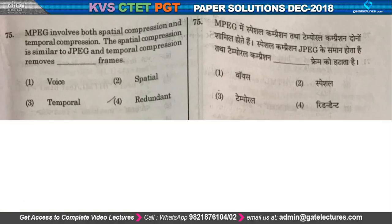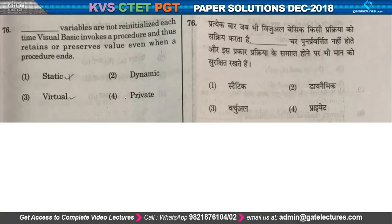Question number 75: MPEG involves both spatial compression and temporal compression. The spatial compression is similar to JPEG. Temporal compression removes redundant frames. So option number 4 is the right one.